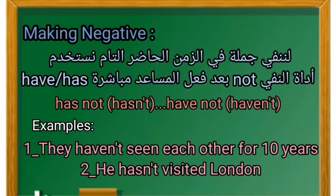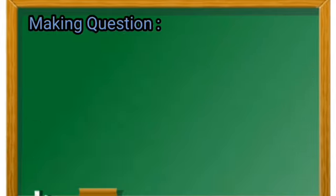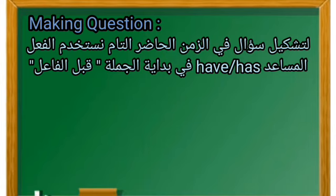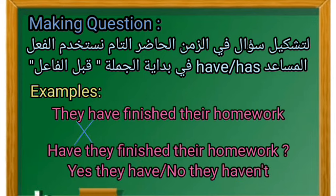هنا استخدمنا أداة النفي not بعد الأفعال المساعدة have/has لتصبح الجملة في النفي. لننتقل سويًا إلى تشكيل السؤال — Making Question. لتشكيل سؤال في الزمن الحاضر التام، نستخدم الفعل المساعد have أو has في بداية الجملة أي قبل الفاعل. مثال: They have finished their homework — لنحوّلها إلى سؤال: Have they finished their homework? الجواب: Yes, they have أو No, they haven't.